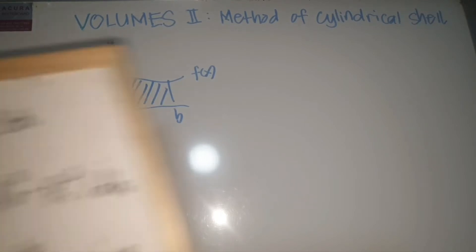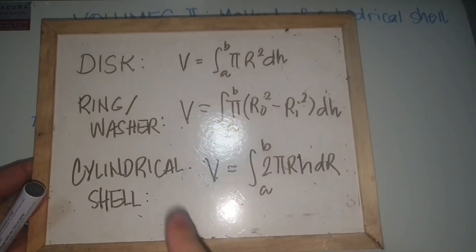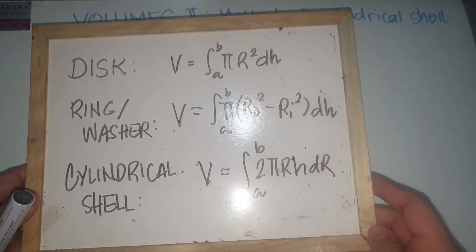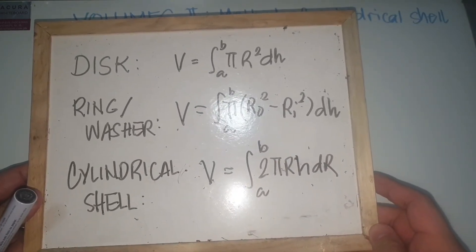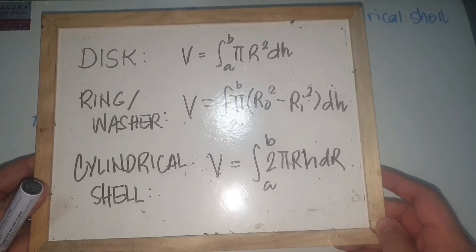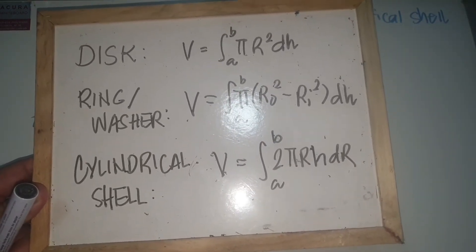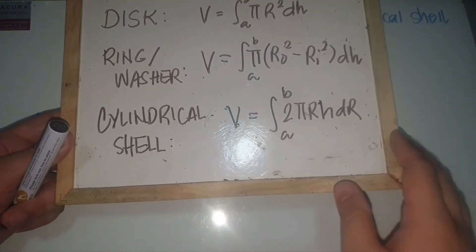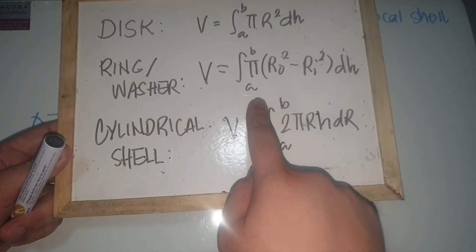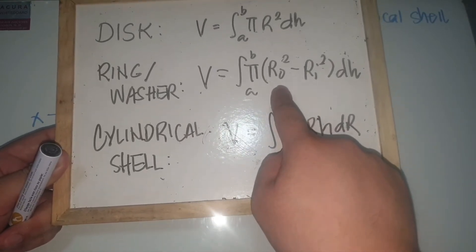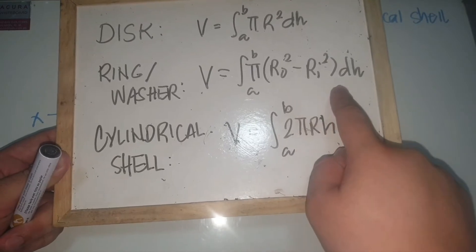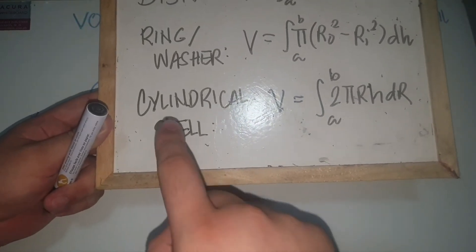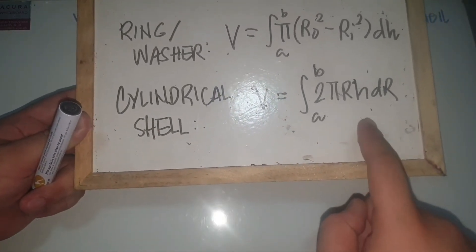Recalling from the past video, for the method of disks the volume is the integral from a to b of π r² dh. For the ring or washer, where there is a space between the shaded element and the axis of revolution, the volume is the integral from a to b of π(outer radius² minus inner radius²) dh. For this video, I'll be discussing the method of cylindrical shells, which has a different formula that I'll show later.